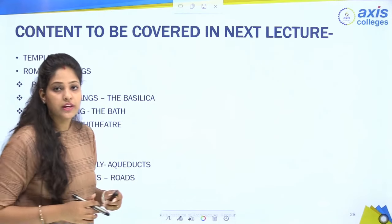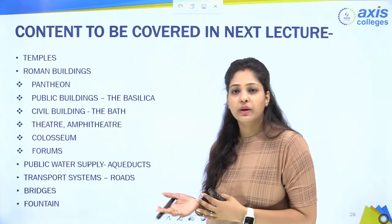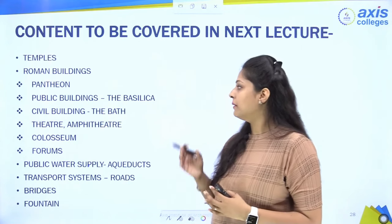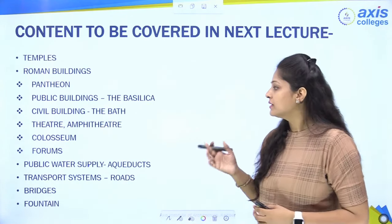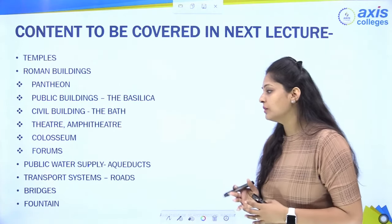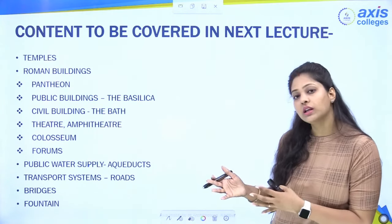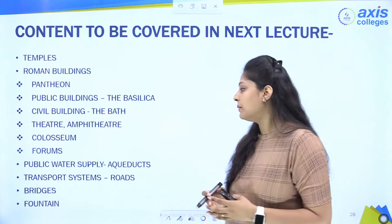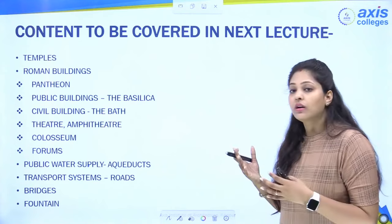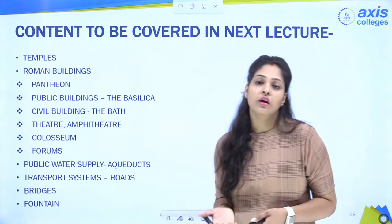That concludes today's lecture. In the next lecture we will cover Roman buildings: temples including the Pantheon, public buildings such as the Basilica, civil buildings like the baths, theaters, the amphitheater, the Colosseum, and the Forum. After that we will learn about public water supply, how aqueducts were made, the transport system including roads and bridges, and how fountains were used.